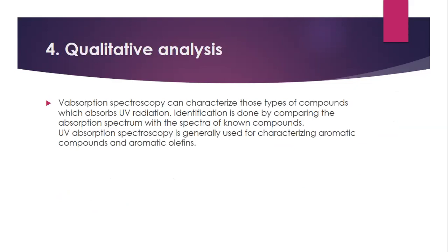The next application of UV visible spectroscopy is qualitative analysis. In this analysis, we can characterize compounds that absorb UV radiation. Identification is done by comparing the absorption spectrum with the spectra of known compounds. UV absorption spectroscopy is generally used to characterize aromatic compounds and aromatic alkenes.